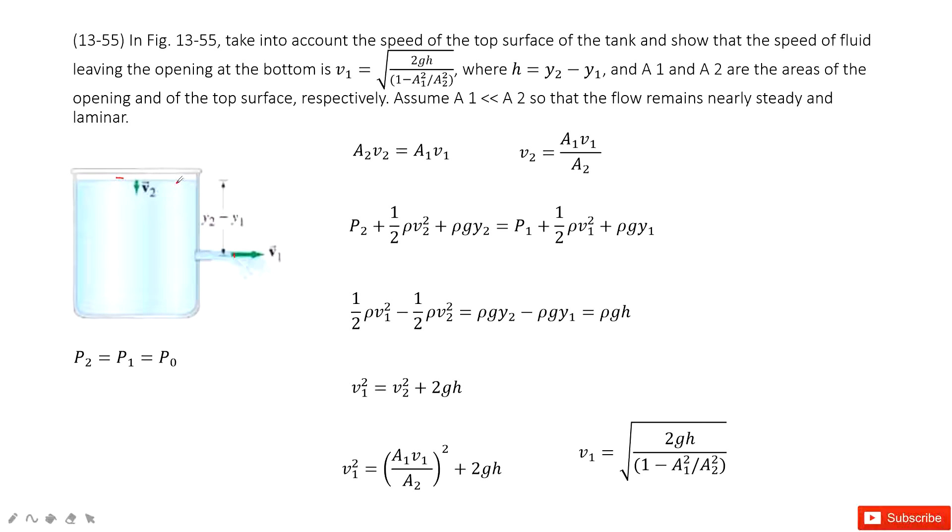So now, how can we consider it? We can consider the continuity equation. We can see the volume of water moved out from this position just equals the volume decreased at position 2. So now this is why A2 times V2 equals A1 times V1. This is the continuity equation. So we can write V2 in this function, put it there.